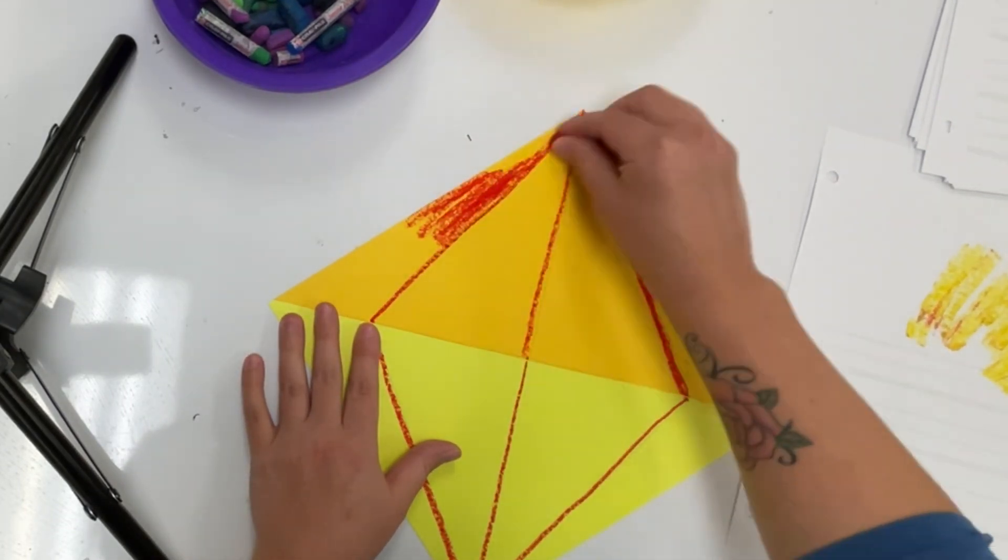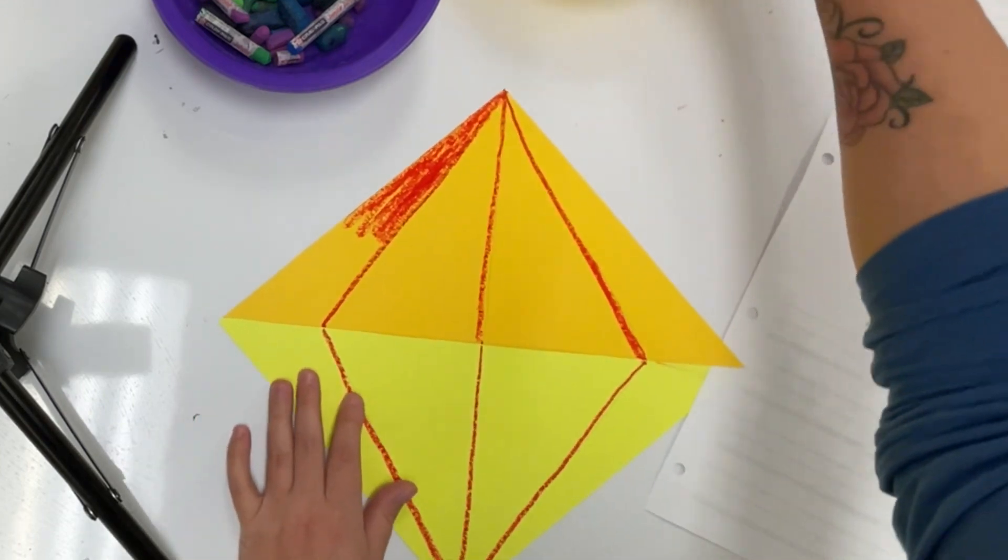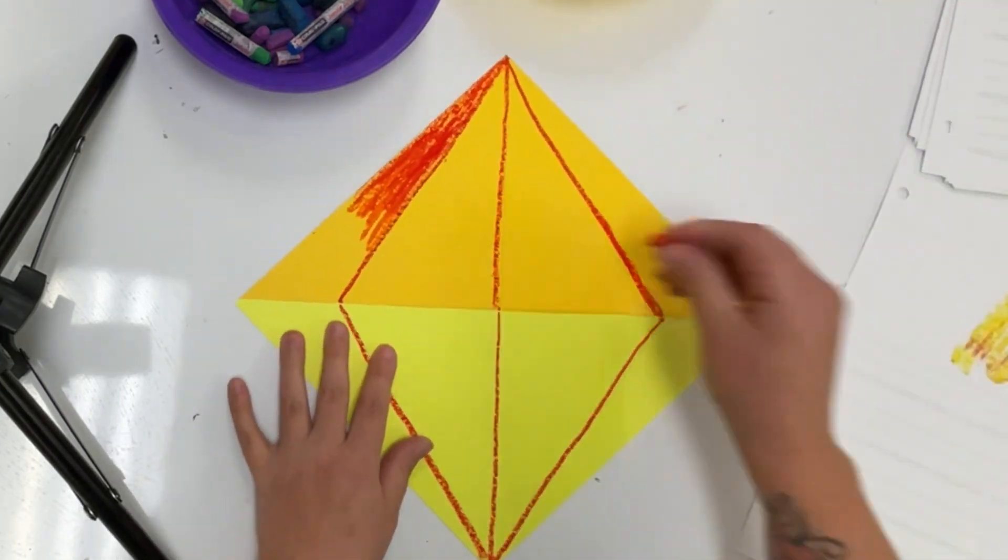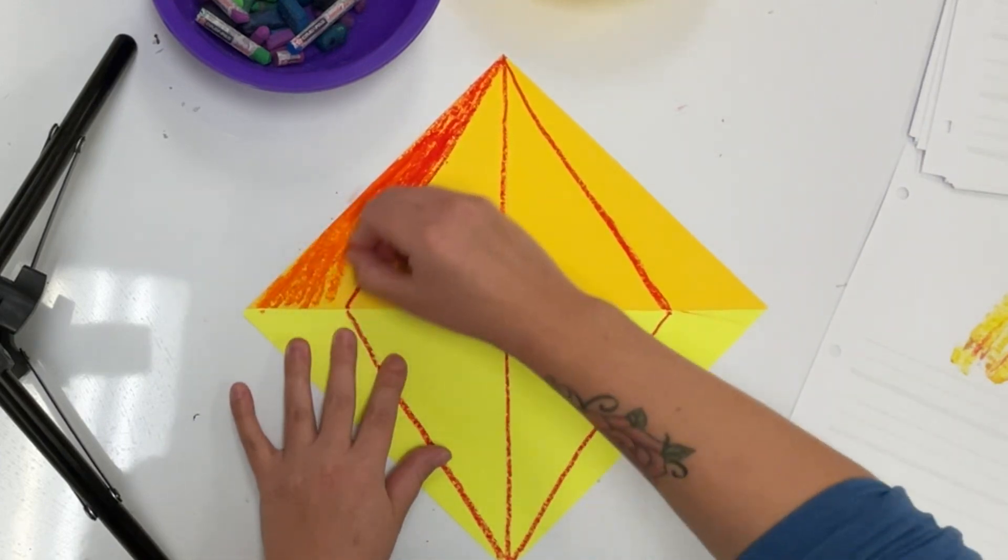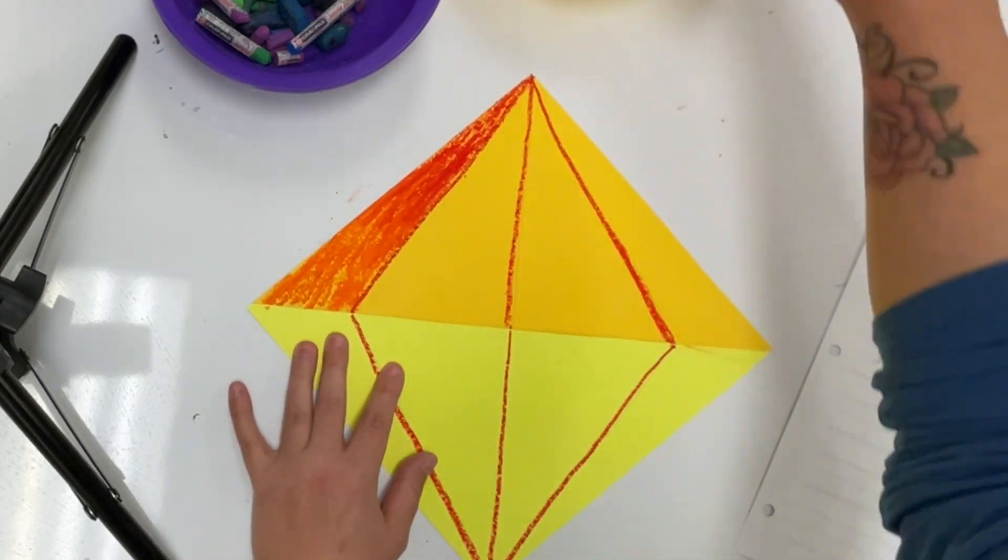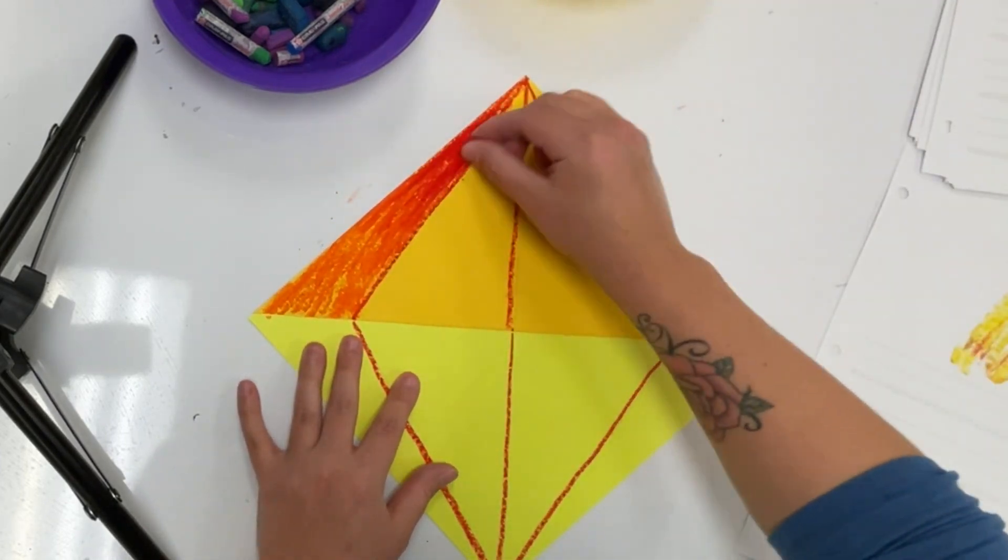When I drew those lines on my diamond, they created smaller sections that I will color in now. And you can choose any color scheme you want. You can add patterns. You can blend colors. All that is up to you.